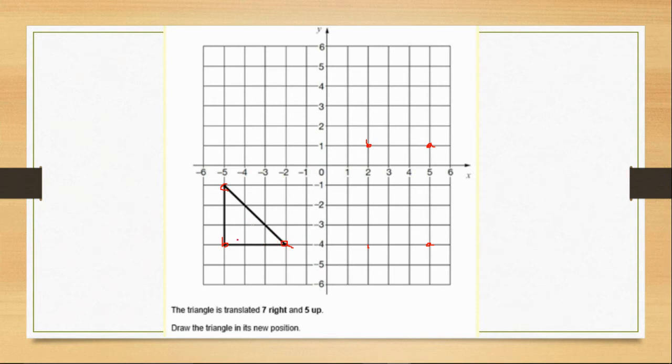So from A to B, it's 1, 2, 3. So we know A, so we just have to move 1, 2, 3. And from B to C, it's 3 again. So it's 1, 2, 3. So we've got C. And then all we have to do again is drawing the lines up.